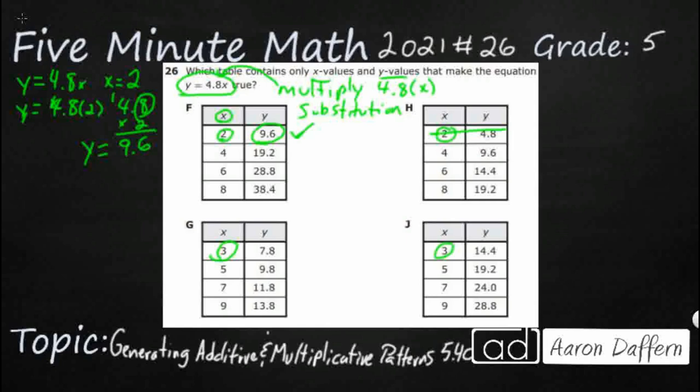So, we are going to say y equals 4.8x. In this case, we are going to say x equals 3. So, we will rewrite it as y equals 4.8 times 3. Remember, we are going to show that with parentheses.